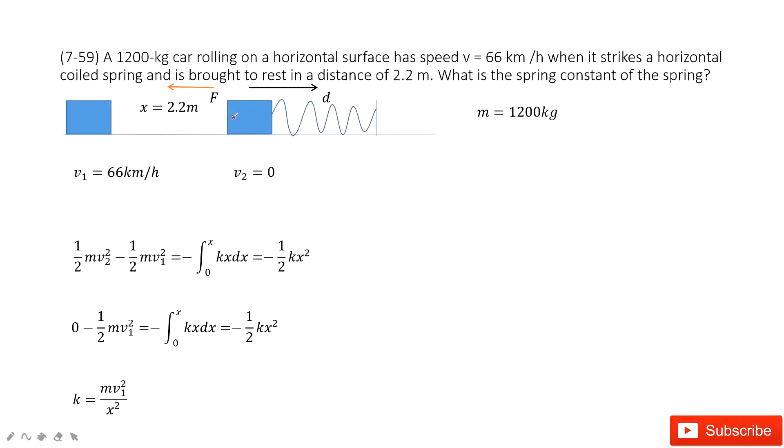The distance it moved is x, or d. The force acting on this car comes from the spring. This force pushes it to the left, while the distance this car moved is to the right.